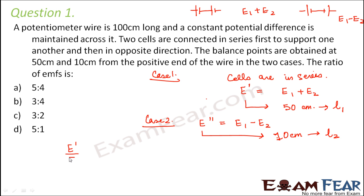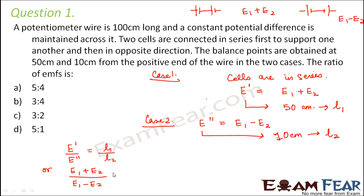In a potentiometer, the ratio of the EMFs is equal to the ratio of the corresponding balancing points. So (E1 + E2) / (E1 − E2) = L1 / L2. We know L1 is 50 and L2 is 10, giving us (E1 + E2) / (E1 − E2) = 50 / 10 = 5.